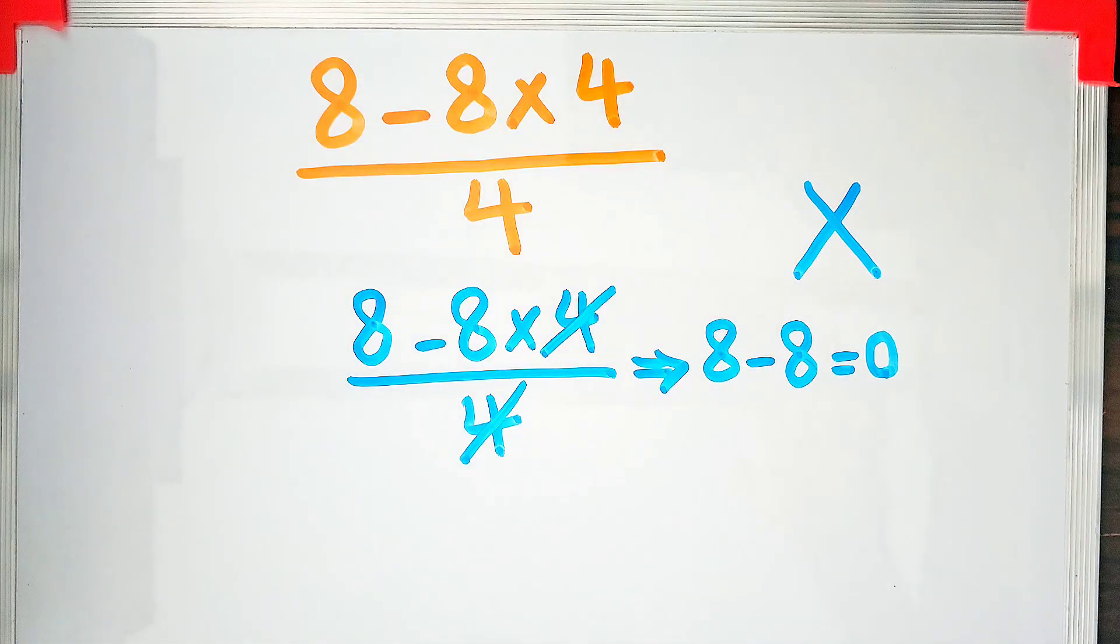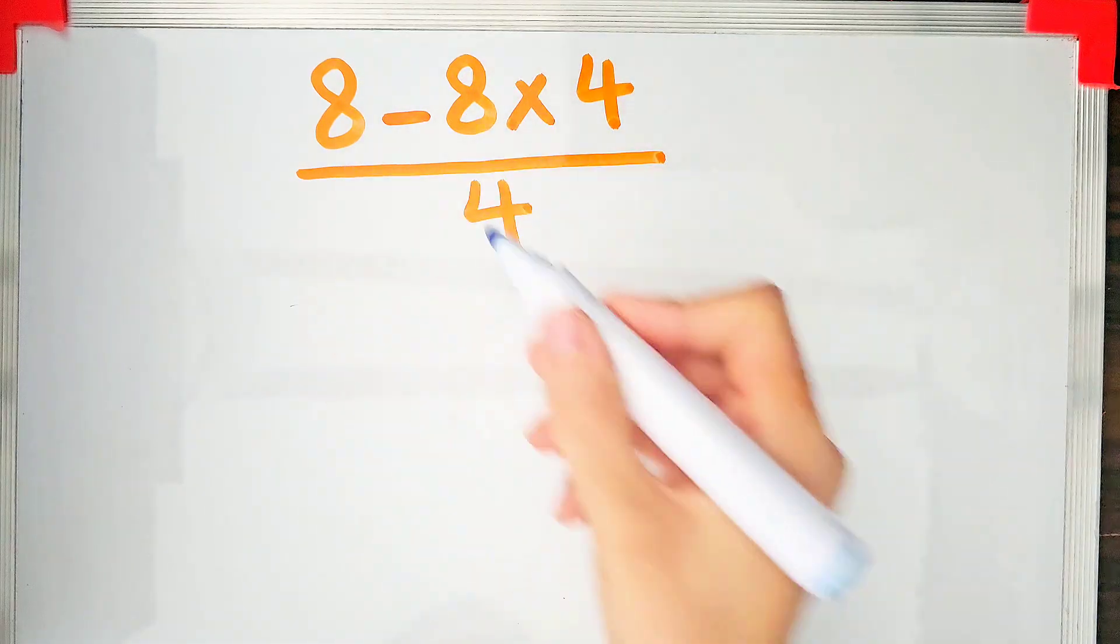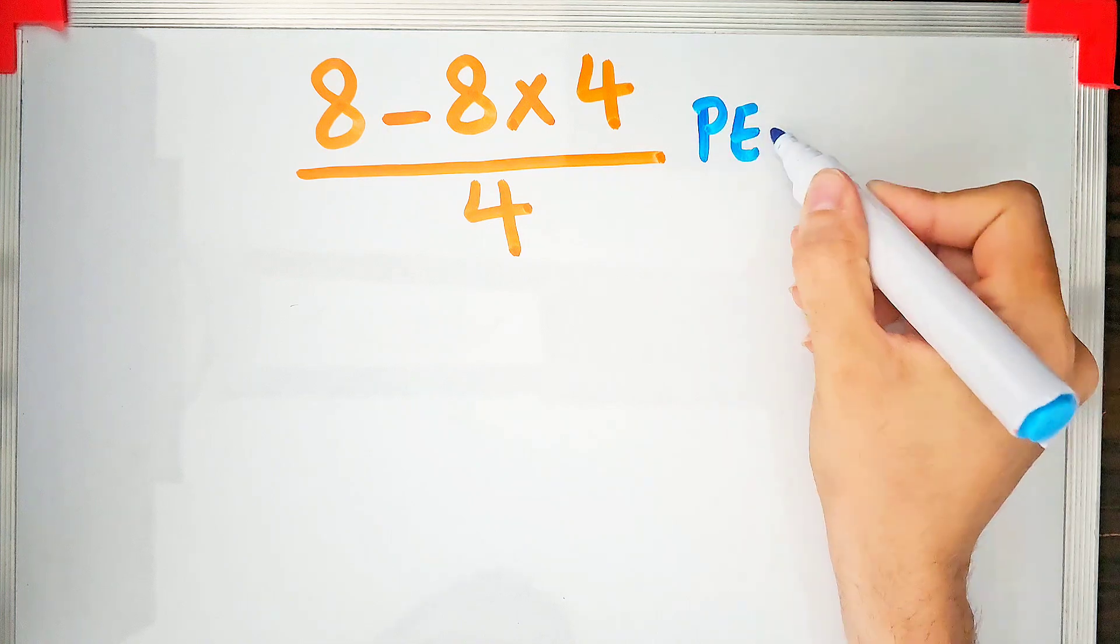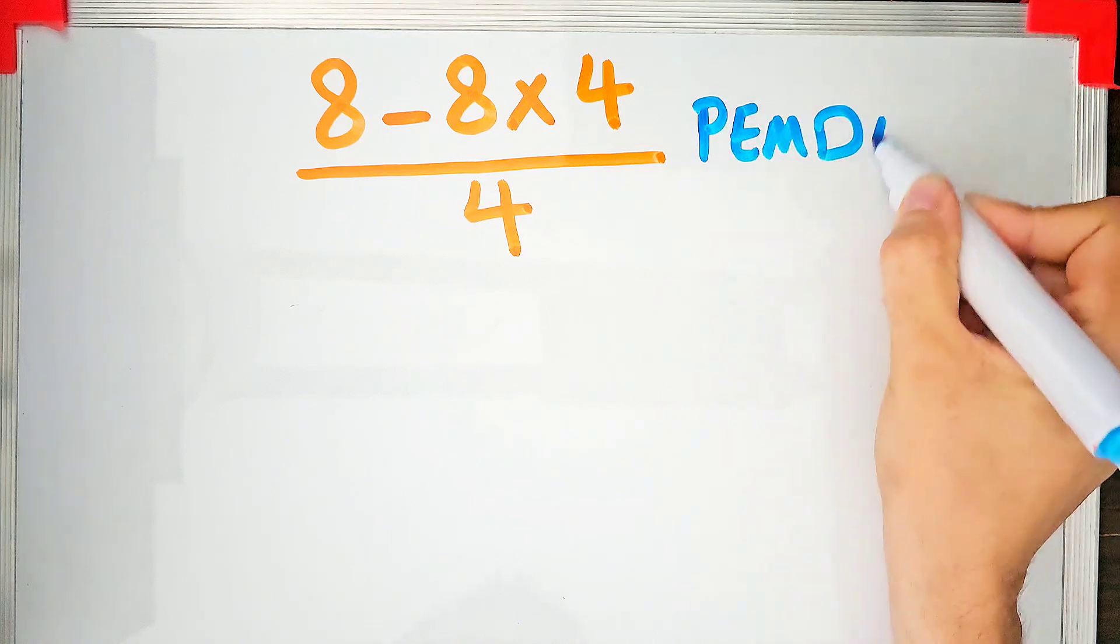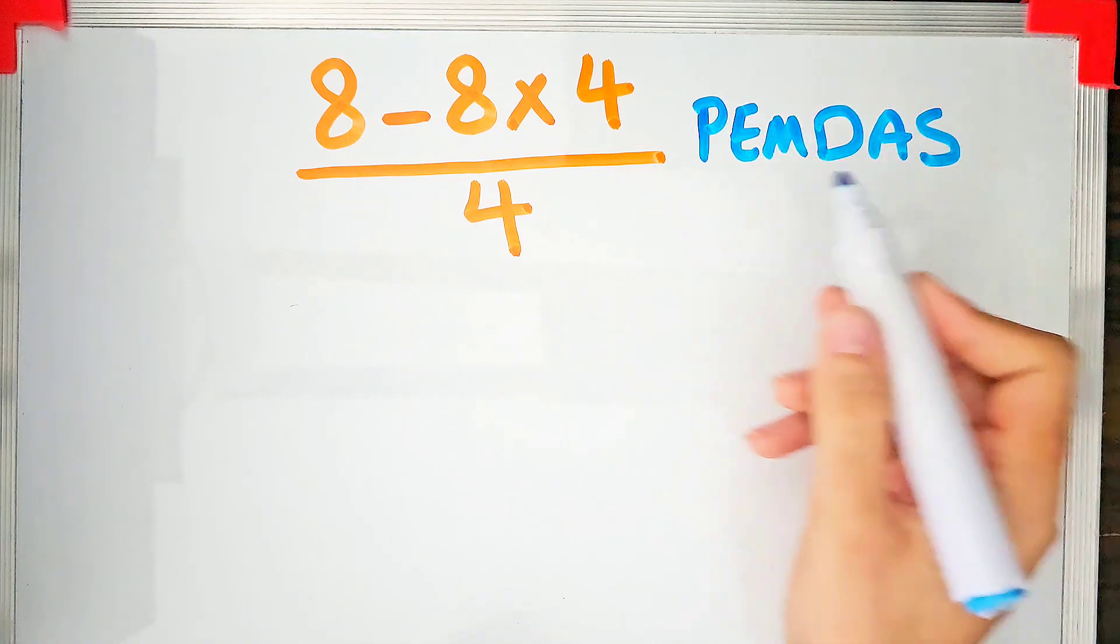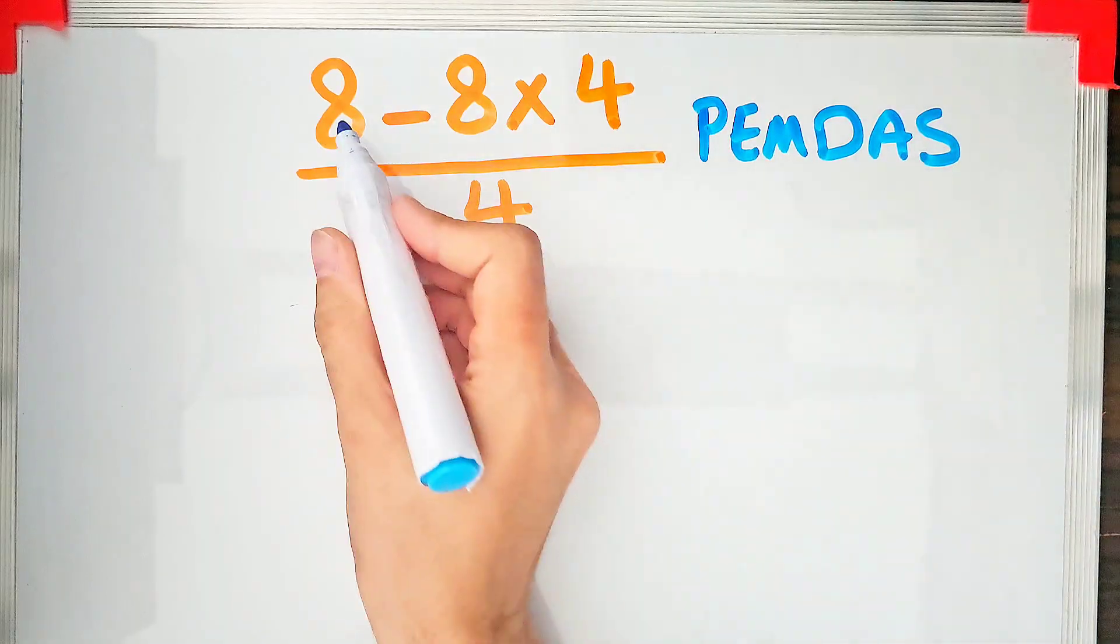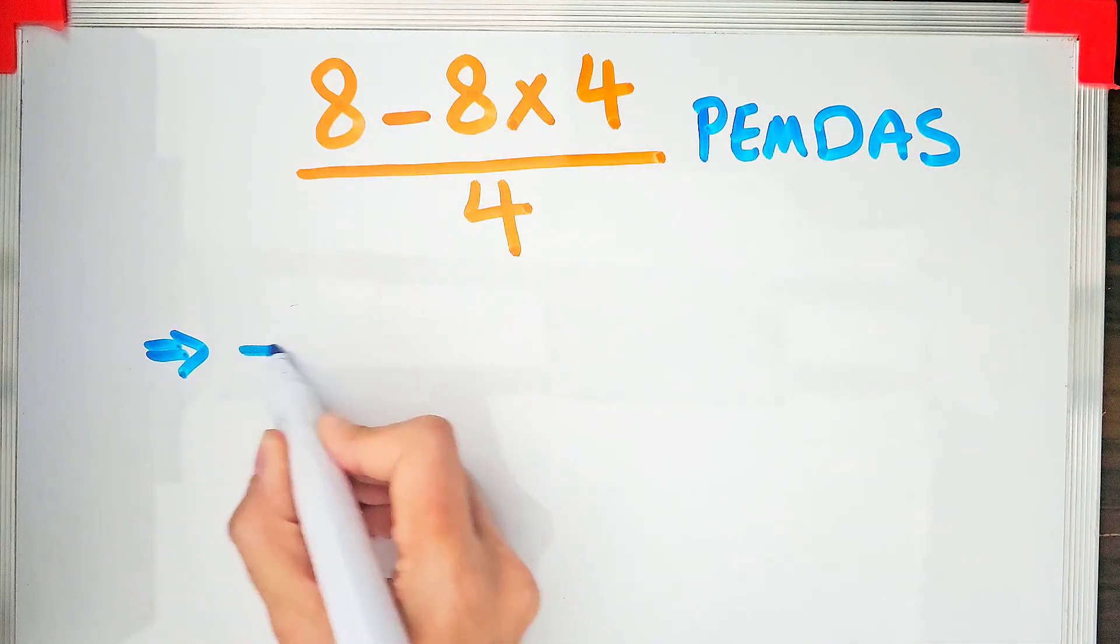Let's solve this question step by step together according to the order of operations called PEMDAS. First we do parenthesis, after that exponent, after that multiplication or division, after that addition or subtraction. In the numerator we have subtraction and multiplication.